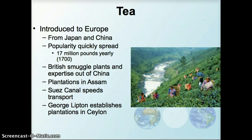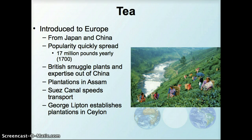One of the major crops that this agriculture was built around was tea. It was introduced to Europe from Japan and China and became extremely popular. The expertise on how to grow it was very heavily guarded in China.